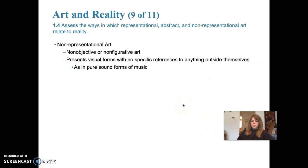Next up: non-representational art, the third of our three categories. This type of art is not meant to represent anything at all. We experience non-representational art as being boiled down to the basic building blocks of art. Things like texture, line, color, and shape are the predominant characteristics we notice, and there really is no subject to these paintings.